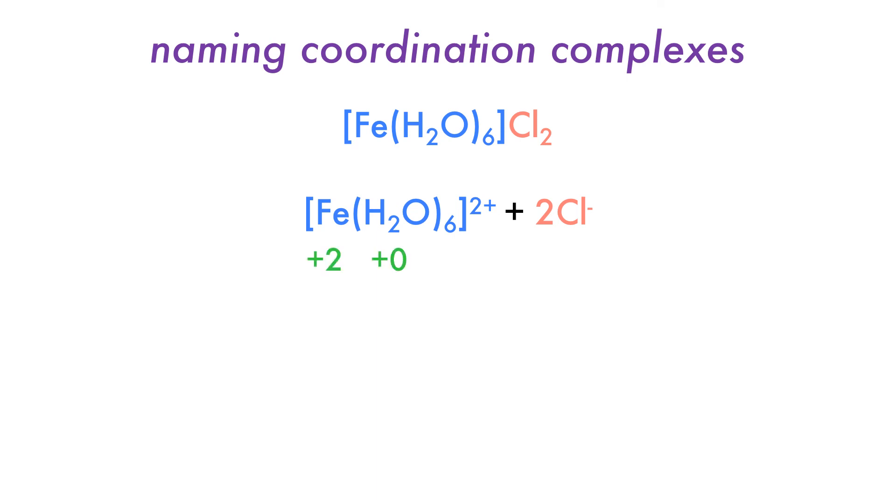Water is a neutral ligand, which means that the iron must have a plus two charge, since the charge of the iron plus the six zero charges must be plus two. Thus we can write Hexa-Aqua iron chloride.